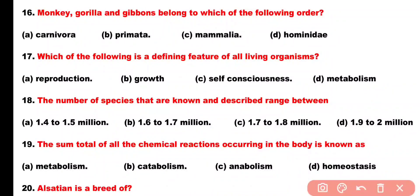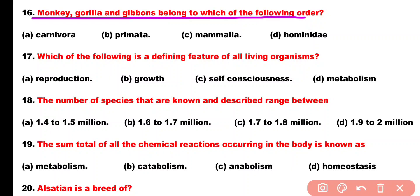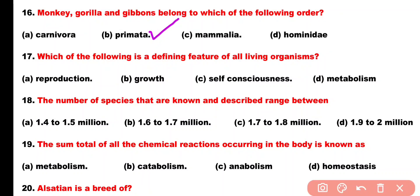Question number 16. Monkey, gorilla and gibbons belong to which of the following order? Option A: Carnivora, Option B: Primata, Option C: Mammalia, Option D: Hominidae. Correct answer is Option B. Monkey, gorilla and gibbons belong to order Primata.